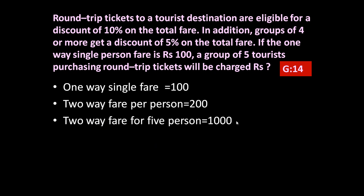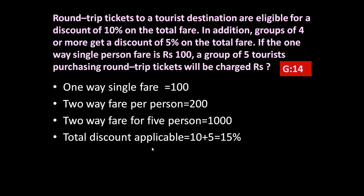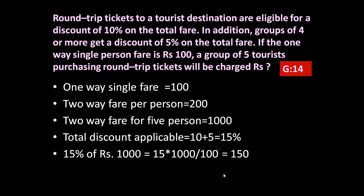The two-way fare for five persons is 200 into 5, that is rupees 1000. Now the total discount applicable: 10 percent for round trip and an additional 5 percent for a group of four or more, making a total discount of 15 percent. So 15 percent of rupees 1000 is equal to 15 into 1000 divided by 100, which equals rupees 150.